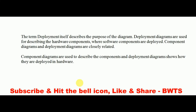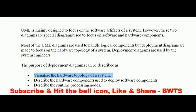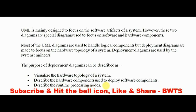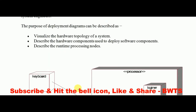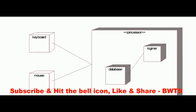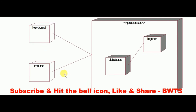Next is the deployment diagram. Deployment means when something is ready to be delivered or deployed. It helps us visualize the hardware topology — networking — and describes the hardware components we are using to deploy the software components in the system. For example, keyboard and mouse are hardware components used to make the process happen.